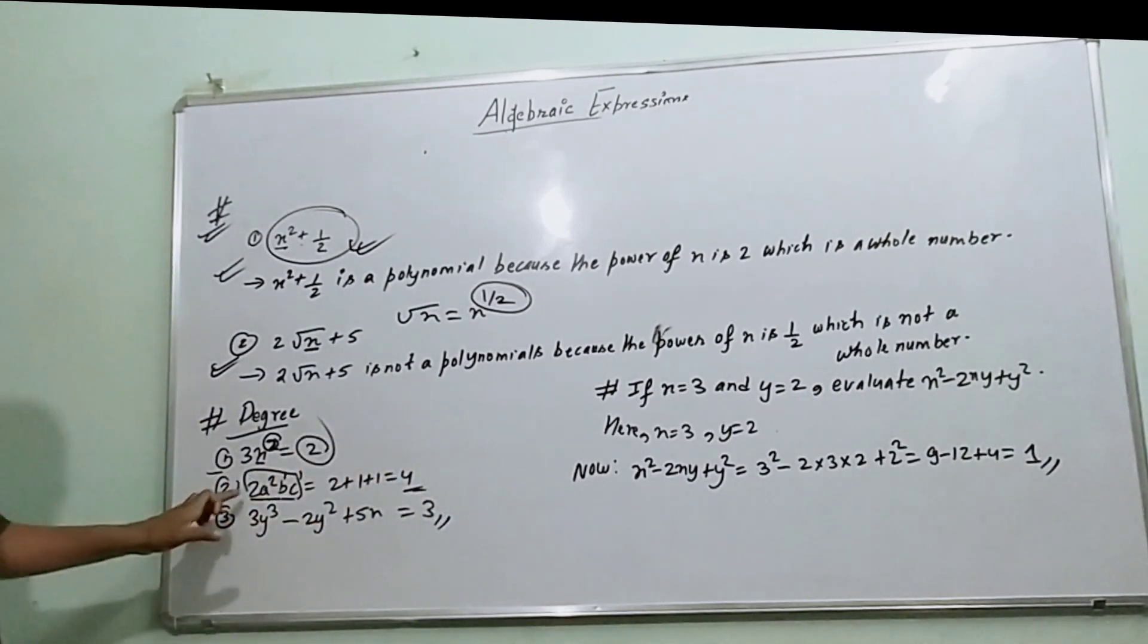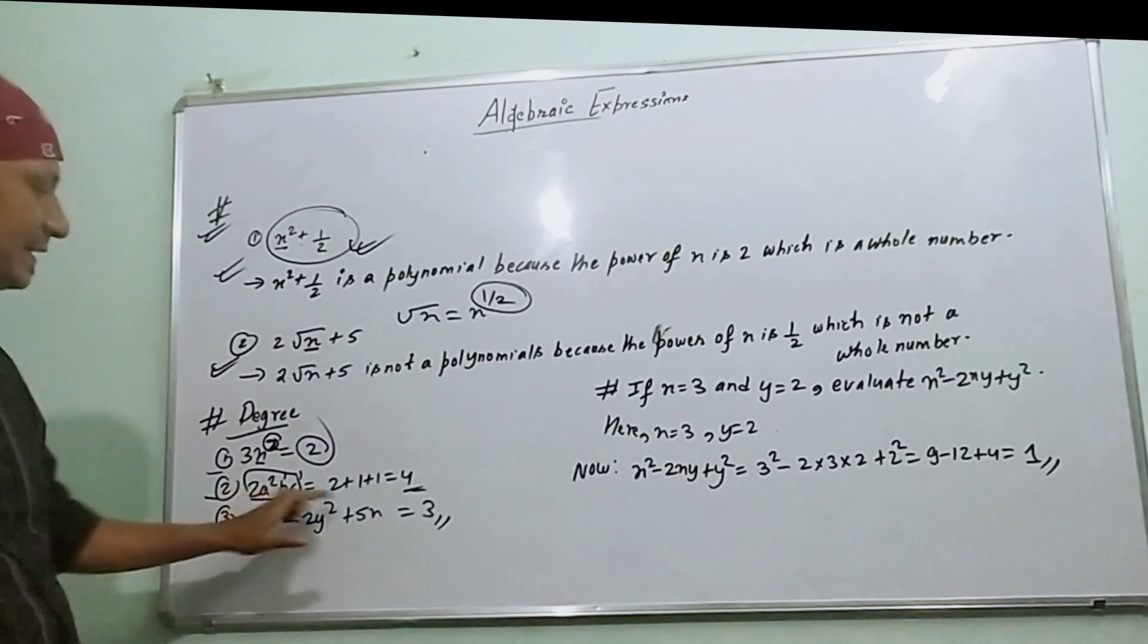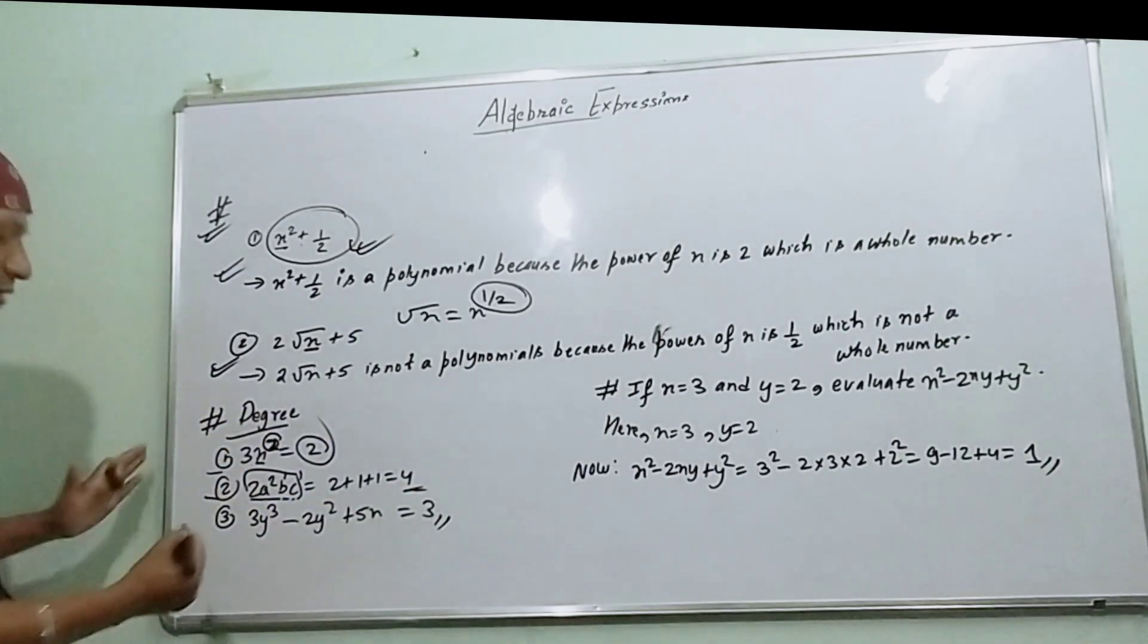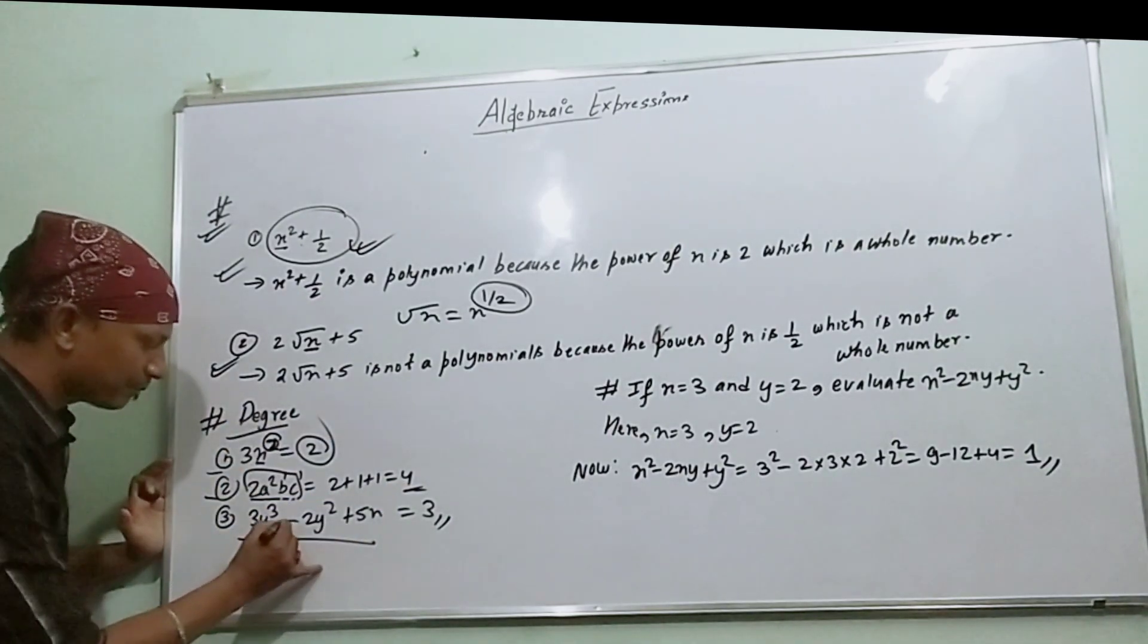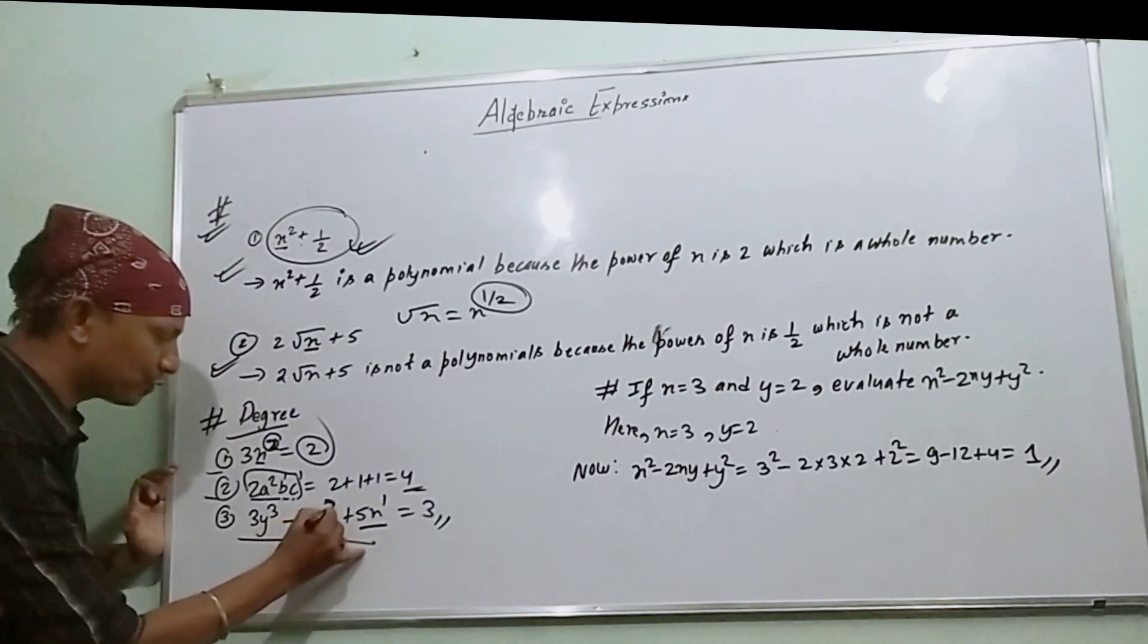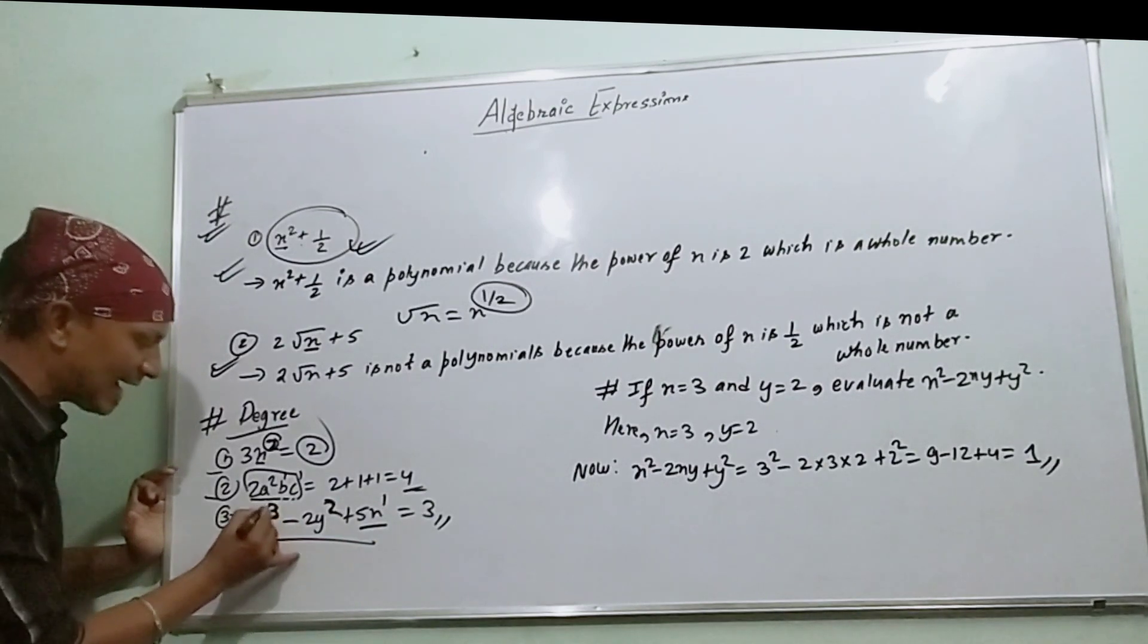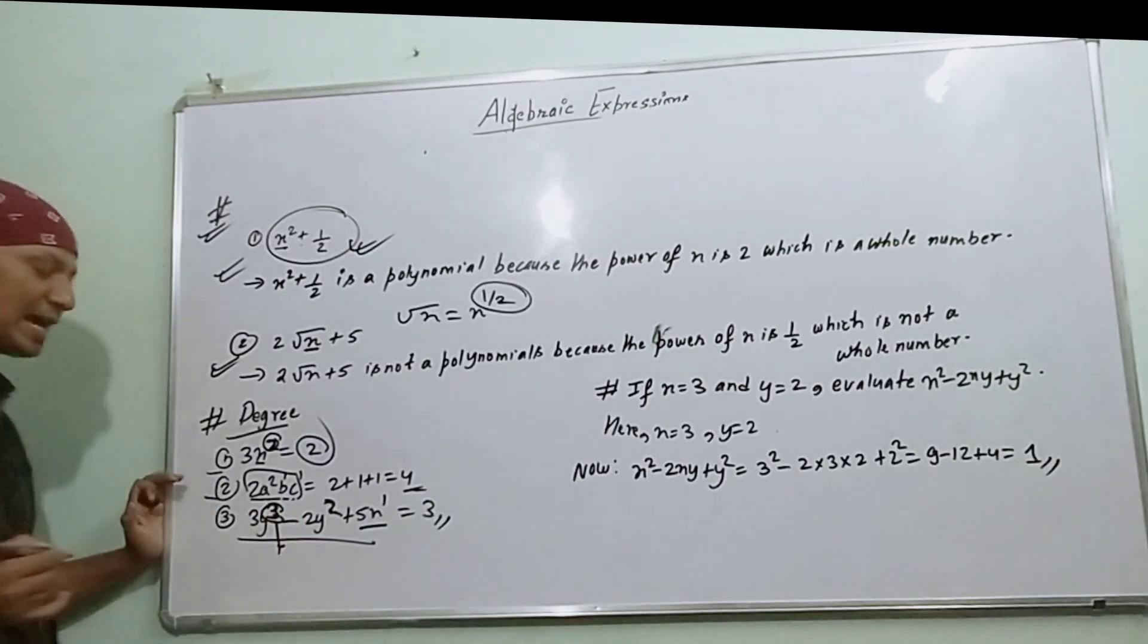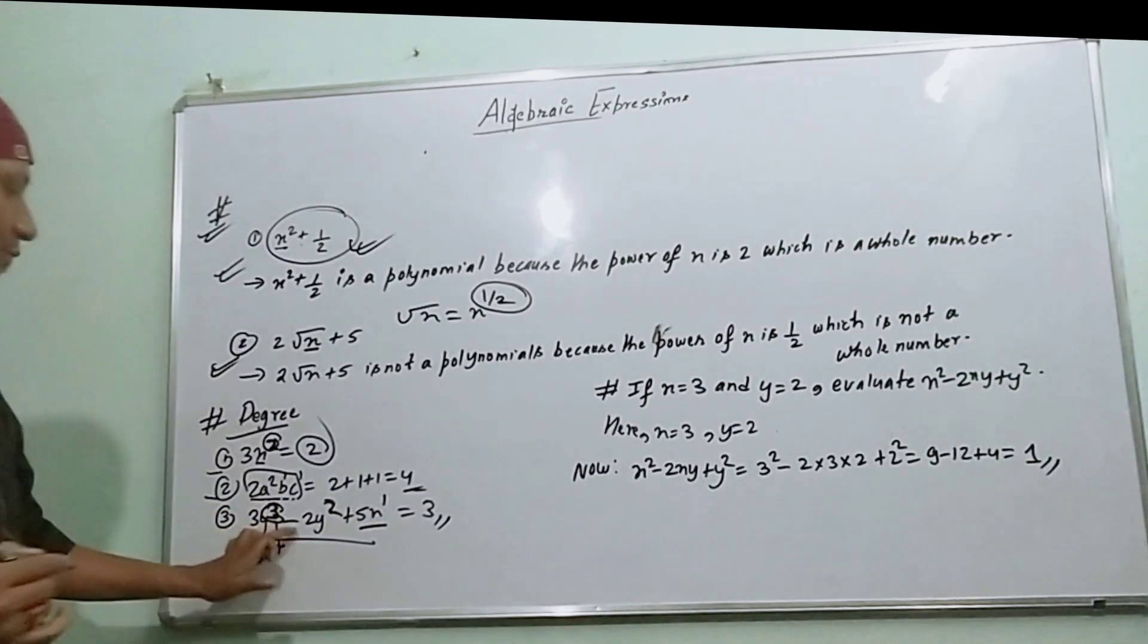Next question: -3y³ - 2y² + 5x. x has power 1, y has power 2, and y has power 3. The highest power is 3, so the degree of -3y³ - 2y² + 5x is 3.